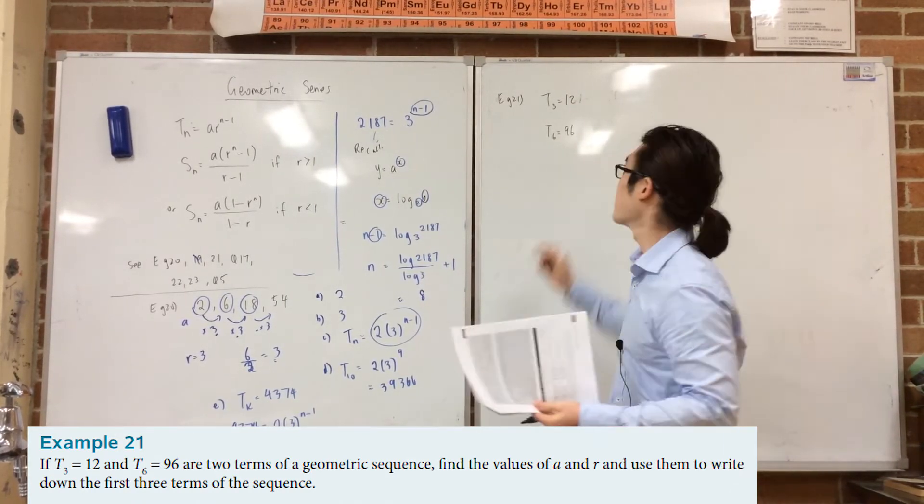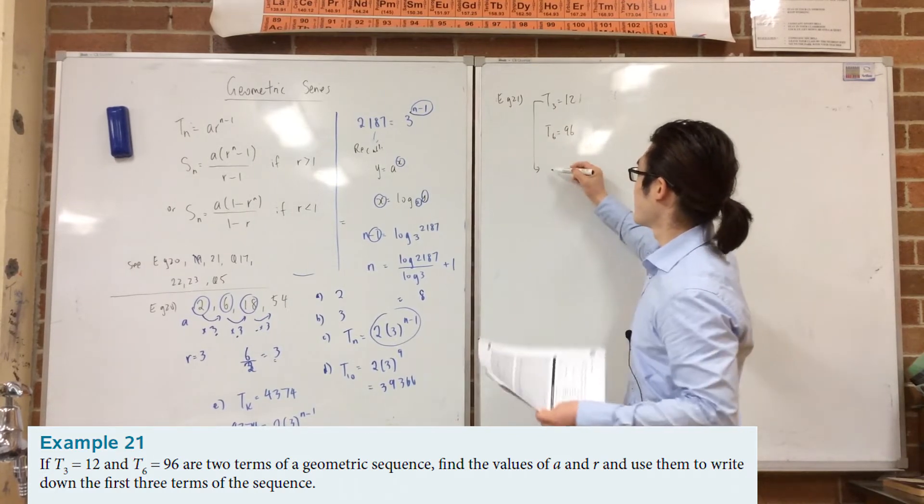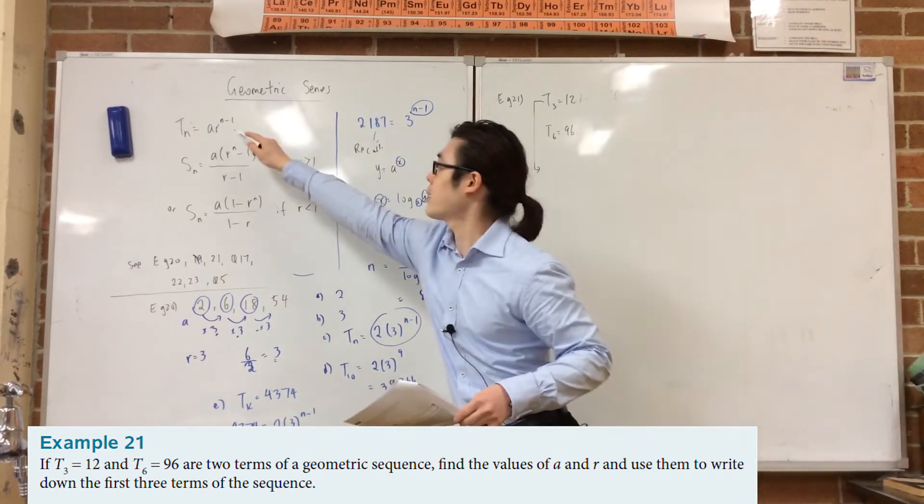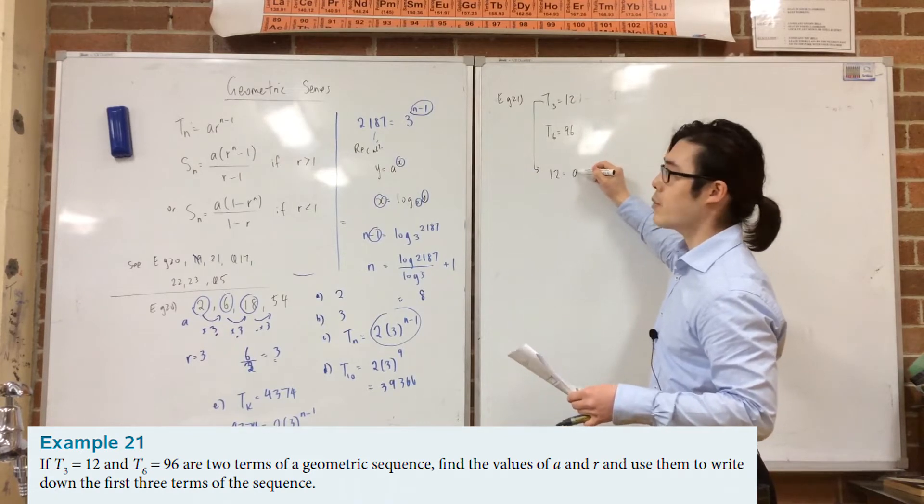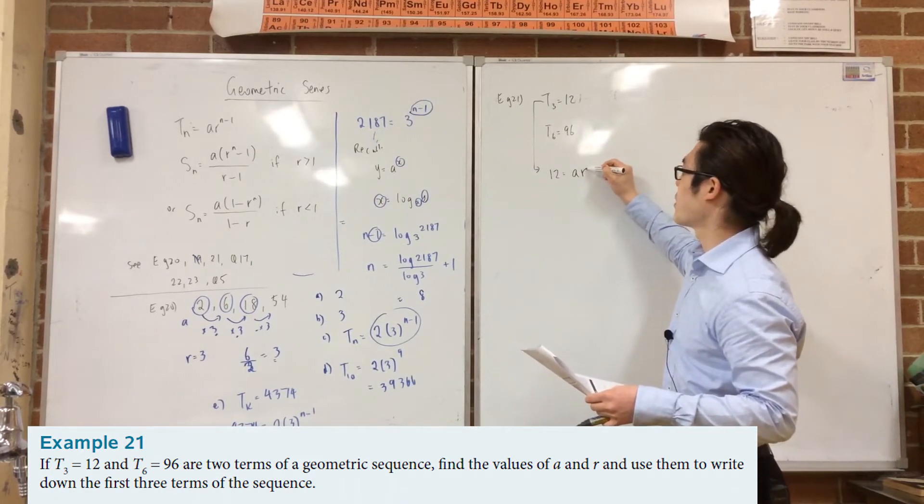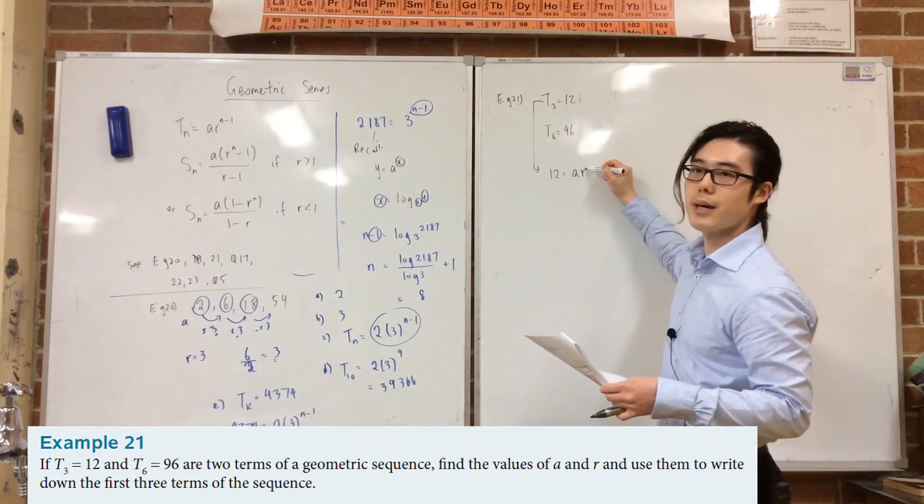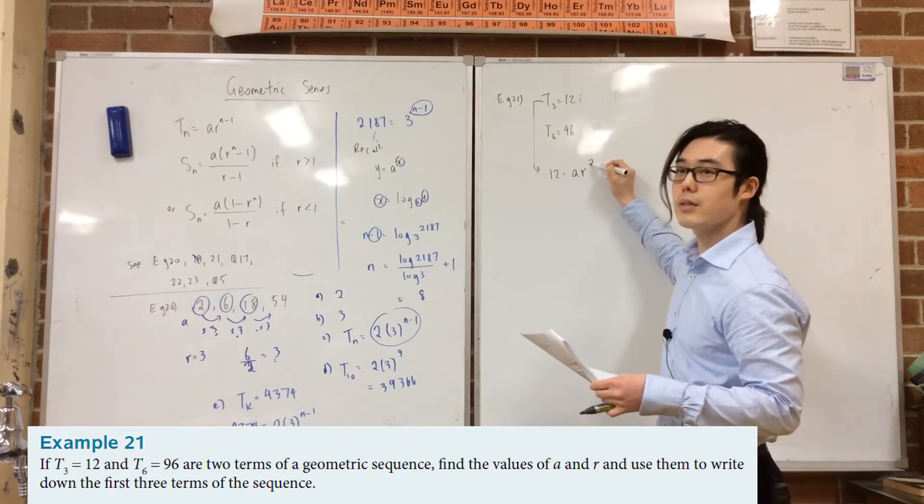So going backwards when you're just given facts. So the third term is 12. The sixth term is 96. Those two are in geometric sequence. Find the values of a and r. And then find the first three terms. So it's a simultaneous equation once again. So from here, so your generic formula is that.